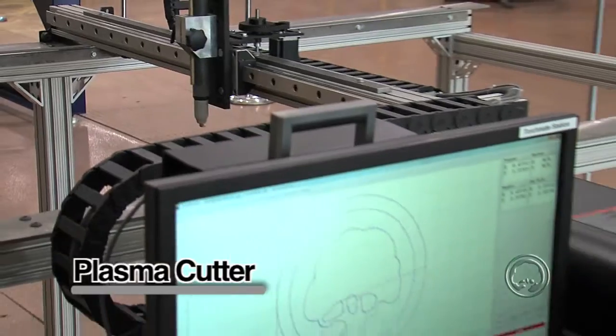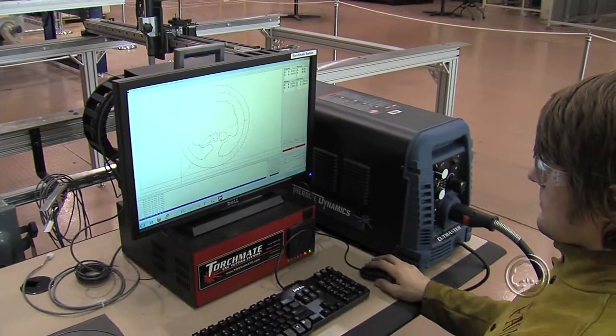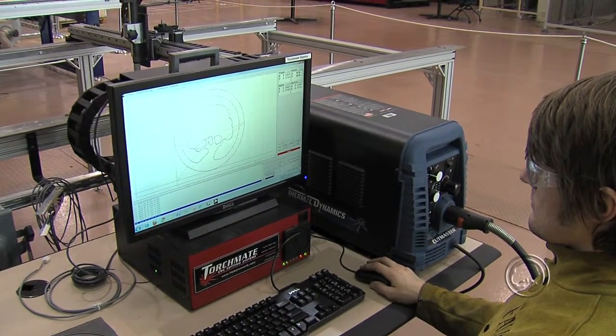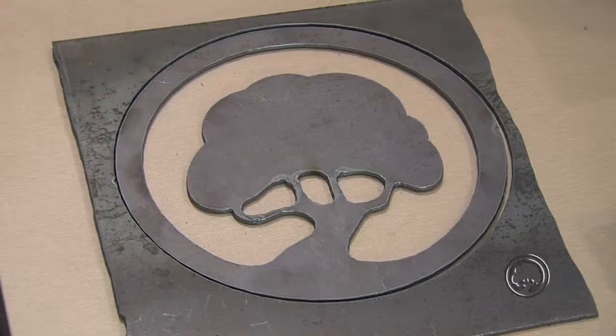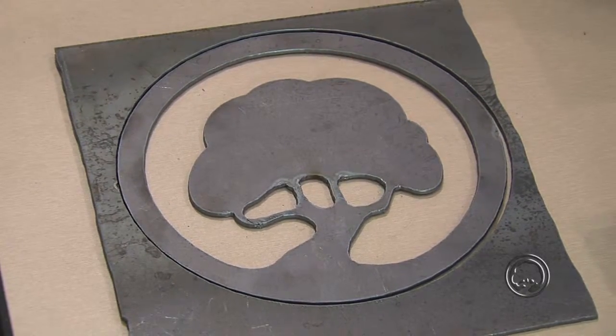We have a plasma cutter, which is a similar tool that's used to cut steel. So it's basically an ultra-hot spark that comes out and cuts through steel products.